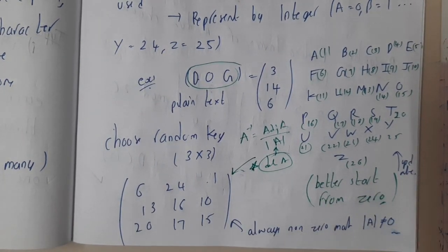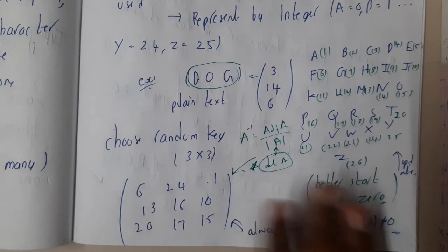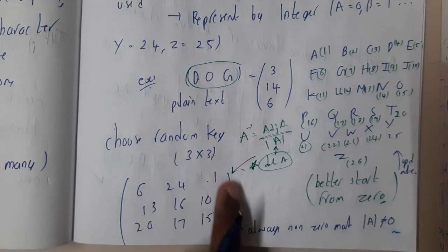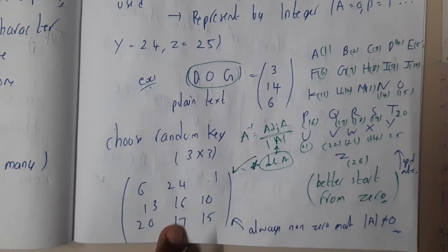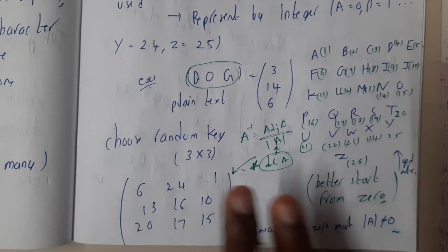Determinant of A is what we discussed in matrices in first year. Basically, determinant of A should never be zero because if denominator is zero it could lead to infinity. That is the reason why the matrix, whichever you are selecting, is random but the determinant should never be zero.